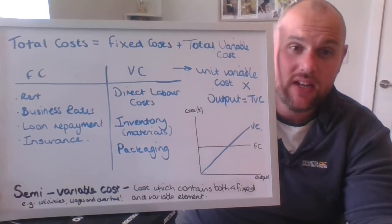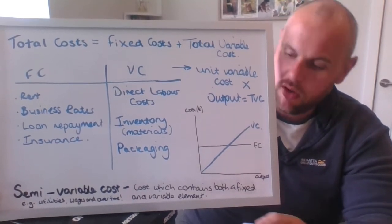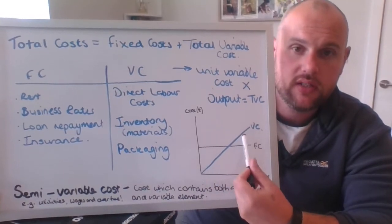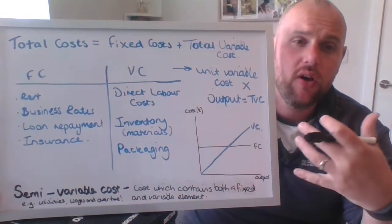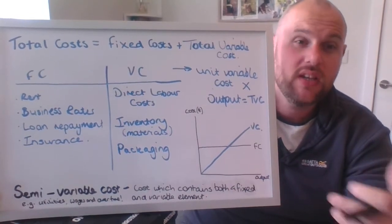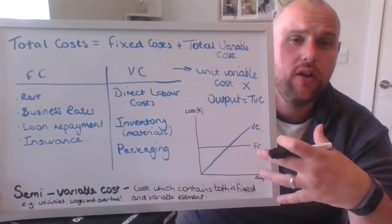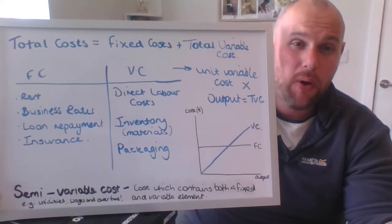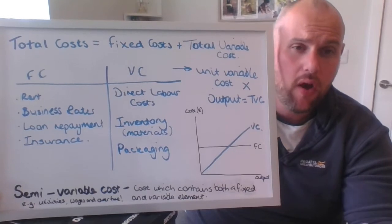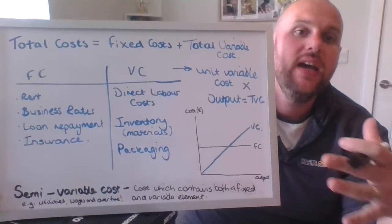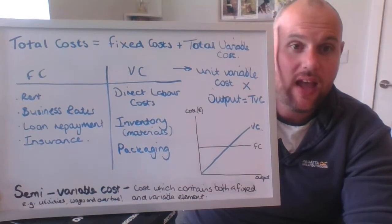Variable costs, though — well, they vary. They change in relation to output, so as output goes up, so do variable costs. There are lots of examples of variable costs. Direct labour costs: if you can attribute labour costs directly to the production of a product, that is a variable cost. Inventory, stock, raw materials, packaging — if we think about somebody like Amazon, those oversized boxes they send your stuff in, that's part of their variable cost. Every time you buy a product from them and they send it out in an oversized box, they have to pay for and replace that box, which adds to their variable cost and increases with more sales. If they didn't sell any products, they wouldn't need any oversized boxes.